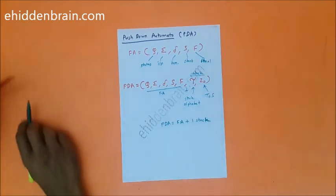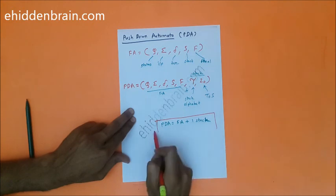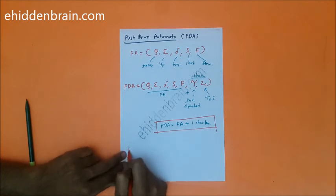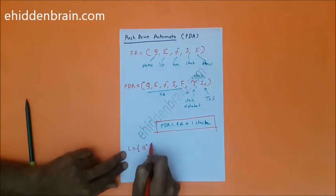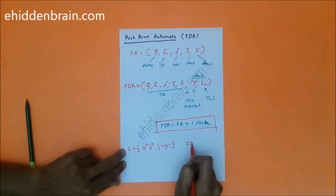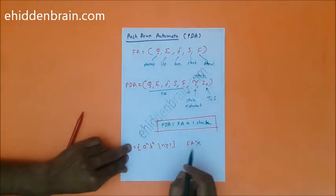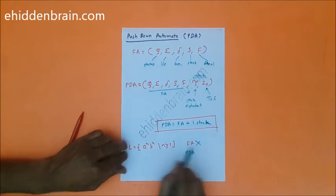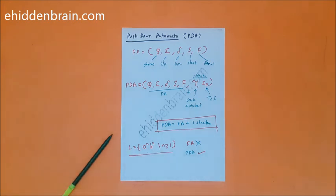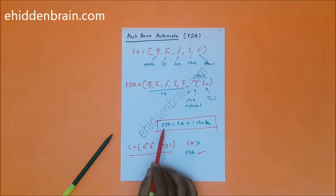That one stack is used as a memory element. Finite automata don't remember strings — there is no remembrance power in finite automata, and that causes problems for languages like a^n b^n for all n ≥ 1. This language won't be accepted by a finite automata, but a pushdown automata can definitely accept this type of language.